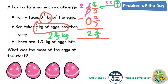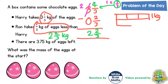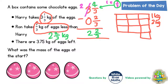You could have started off by drawing a diagram for Harry's three and a third kilograms. So you could have drawn a whole bar for one kilogram split into thirds, another whole bar split into thirds for two kilograms, another whole bar split into thirds for three kilograms, and then the extra third as well — so that's three and a third kilograms. But Ron takes two thirds less than this.